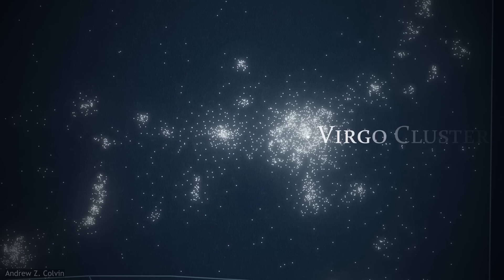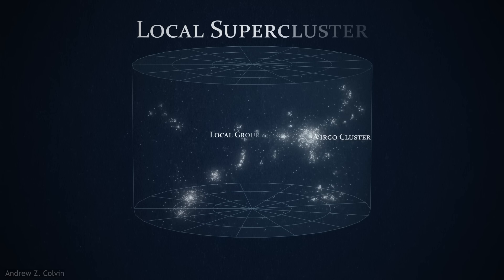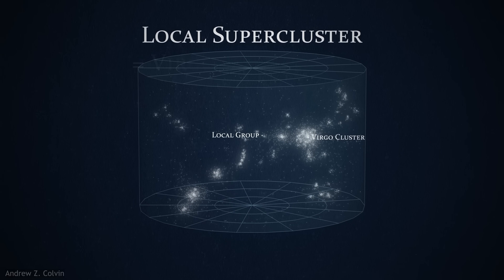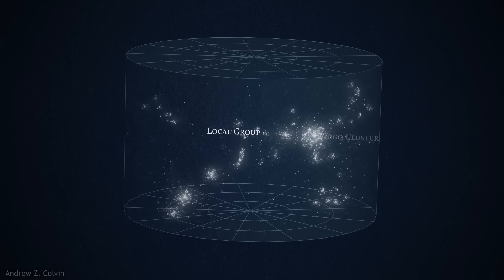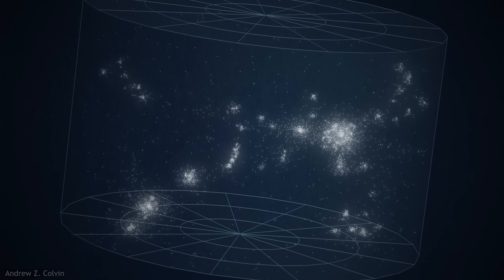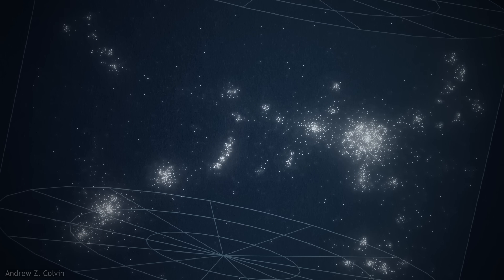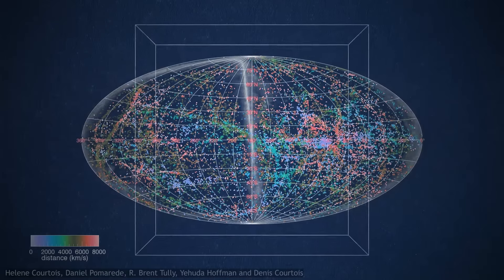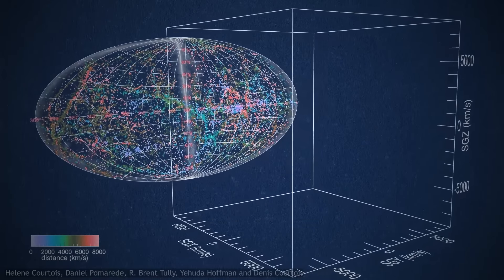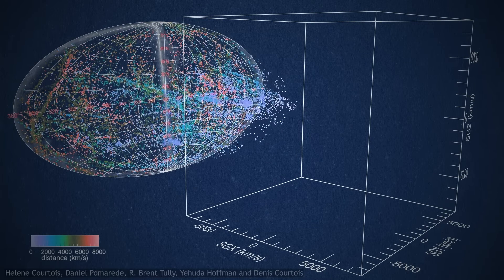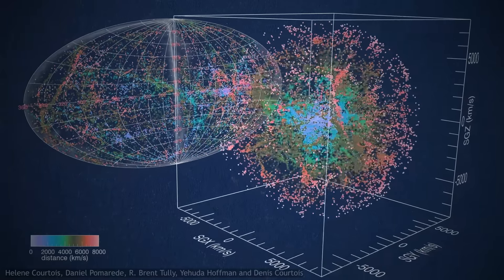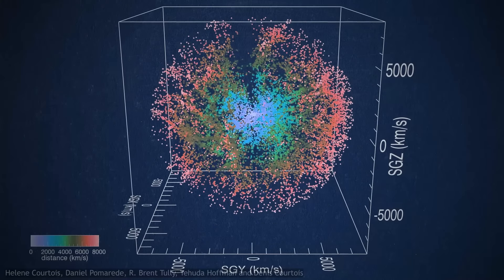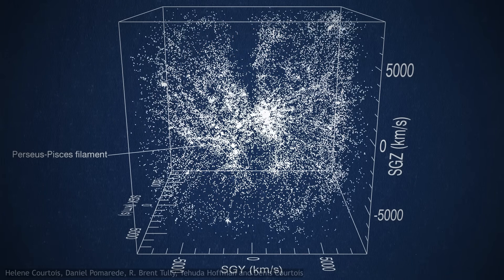Initially, astronomers believed that the Virgo Cluster sat at the heart of the Local Supercluster, also confusingly known as the Virgo Supercluster, a rough collection of around 100 galaxy groups and individual clusters spanning over 100 million light-years in breadth. But beginning in 2014, Brent Tully, along with collaborators Hélène Courtois, Yehuda Hoffman, and Daniel Pomarède, proposed a new definition of supercluster. This definition was not based on spatial extent, but on movement.